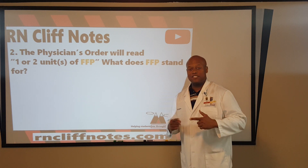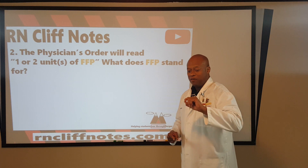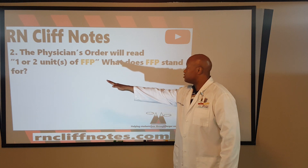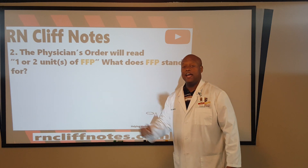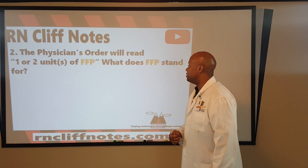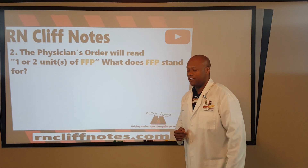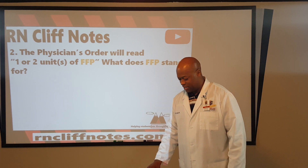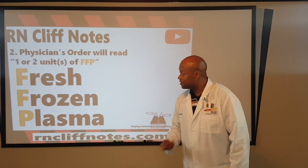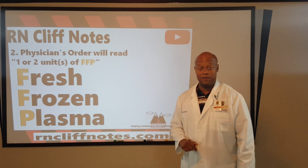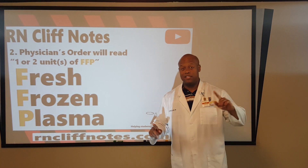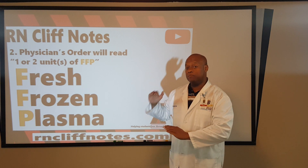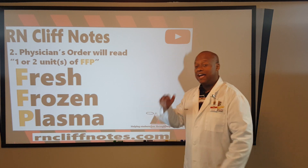We want to take a look at the physician's order. This time we're focusing back on the plasma. Here's how the order would look: the physician's order will read one to two units of FFP. What does FFP stand for? You should have written down: fresh frozen plasma. We were talking about the red blood cells — that was a unit or two of PRBCs, packed red blood cells. This time, FFP.